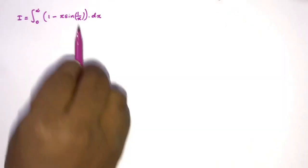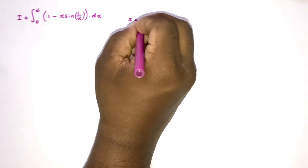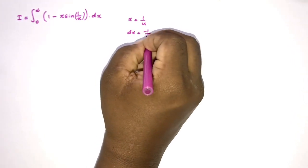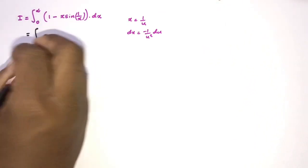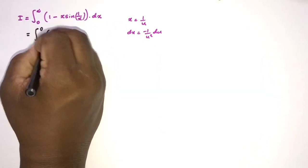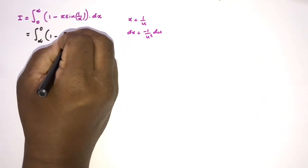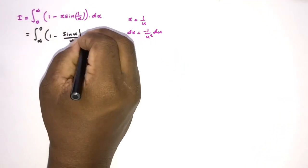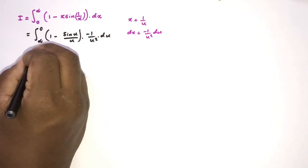We have 1 over x inside the sine, so we take the substitution x equals 1 over u. Differentiating gives dx equals minus 1 over u squared du. For the limits: when x approaches 0, u approaches infinity; when x approaches infinity, u approaches 0. After substitution, sine of 1 over x becomes sine of u, and x becomes 1 over u.